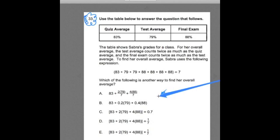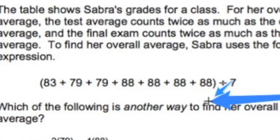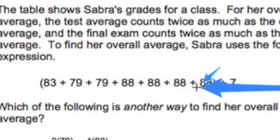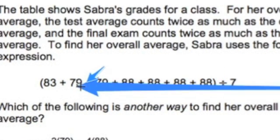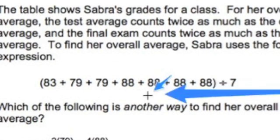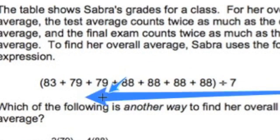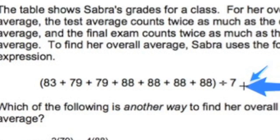To understand this problem, you're going to have to be confident with interpreting expressions. For example, with this one here, these values — whatever they represent — I'm going to be adding them up first, then finding the sum of all of them before I divide by seven. So you have to be able to read those expressions and make sure you do all those operations in the correct order.